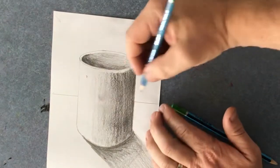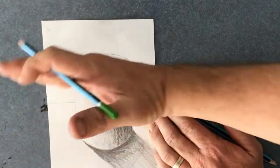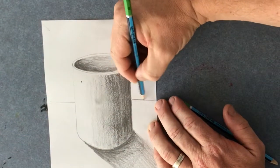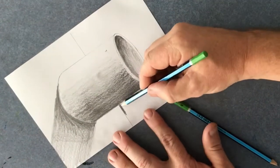And the last thing we're going to do is this is the tabletop and then this is the back wall. Just going to put some shading. I'm going to turn it around.